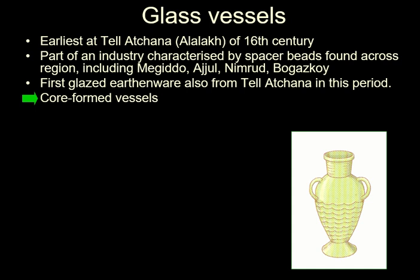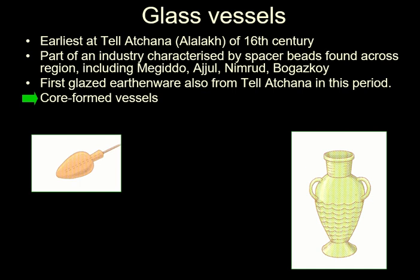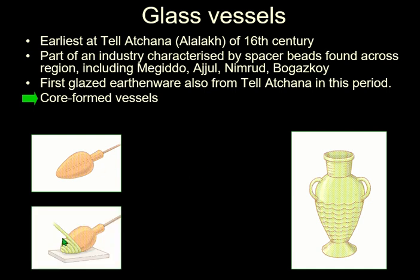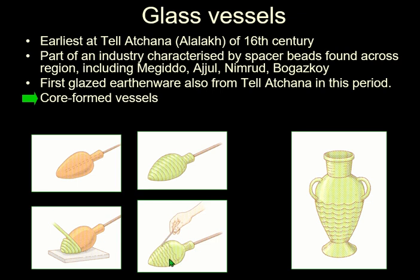The glass vessels they made were core-formed. In this, you have a rod — and they've been using metal rods to make beads for many years. In this case, they put a lump of clay at the end, shaped like the interior of the vessel. Glass is quite easy to melt — you can do it with a candle. In fact, working glass in small amounts is often called candle work. So, with a source of heat, you can melt enough glass so that it's molten and will stick to the outside of this core. You twirl it around until you build up the vessel, and you can decorate it. You can add handles using lampwork — it will stick to itself. And there you have your vessel.